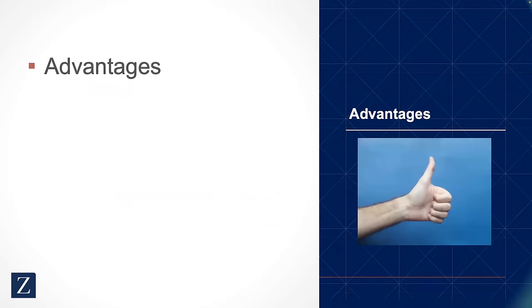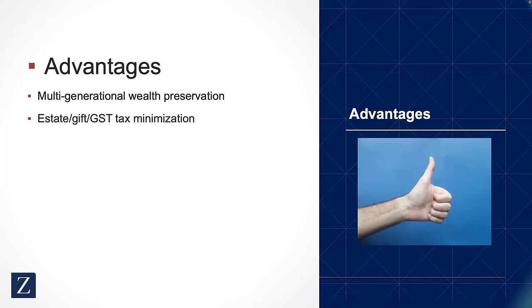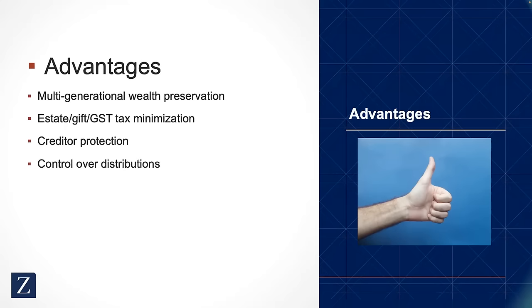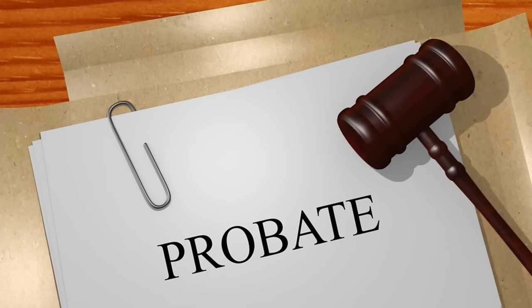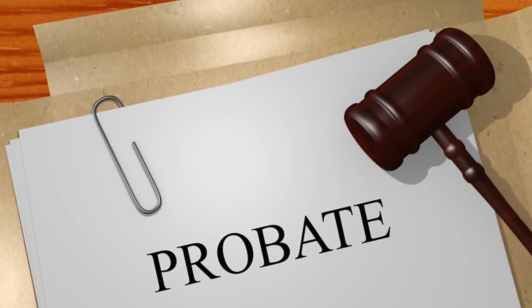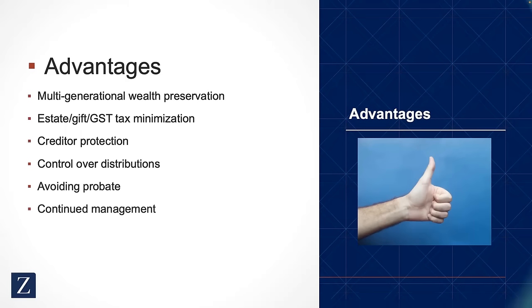The advantages of a dynasty trust are that it lasts for multiple generations and therefore preserves the wealth beyond your lifetime. It can minimize estate, gift, and generation-skipping transfer taxes. It provides for significant creditor protection, particularly for the benefit of the beneficiaries of the trust. It allows distributions to be controlled by the trustee, which may be an independent trustee. Any assets in the trust will avoid probate, the court-driven process that many people have to go through after they die. It allows for continued management of the trust assets by professionals, and it allows you to leave a legacy for your family beyond your lifetime.